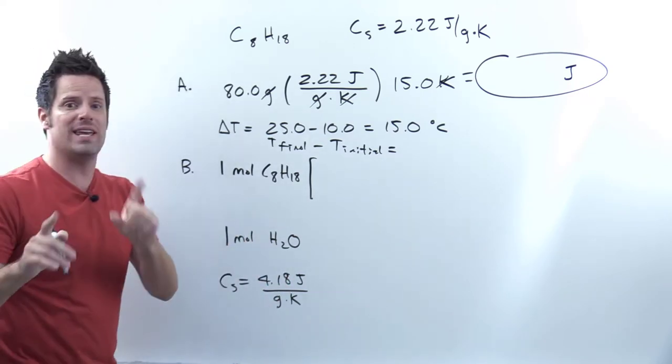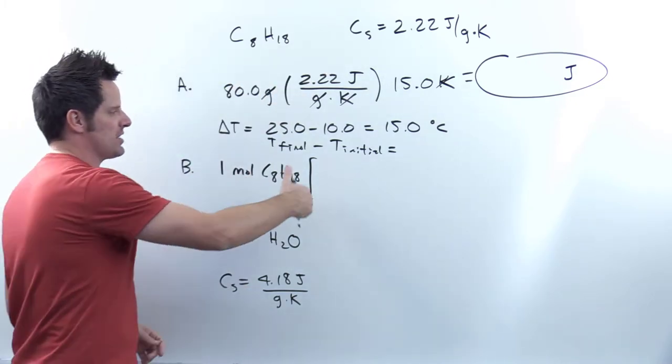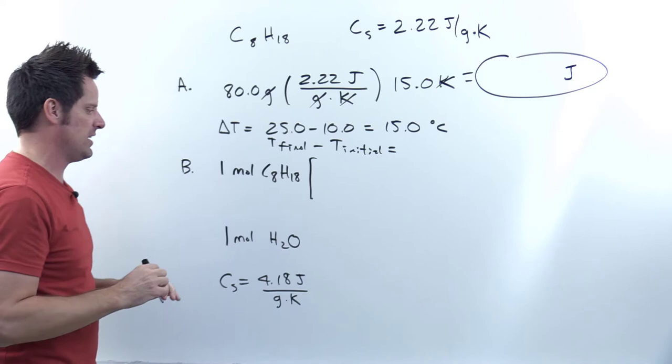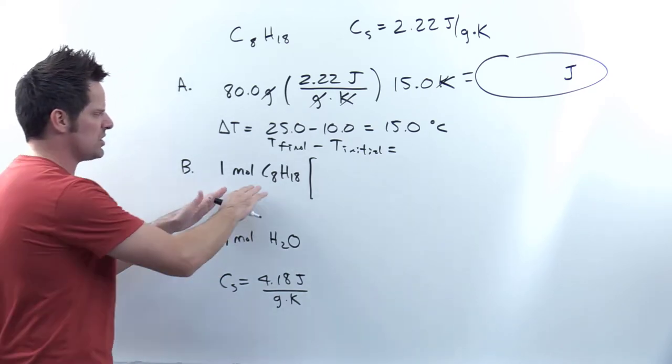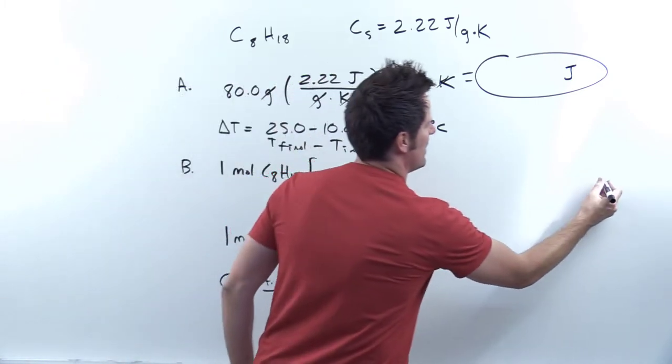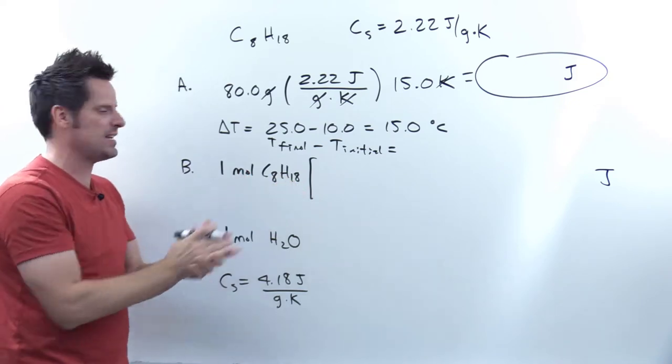So how do we do that? Well, again, we're going to use this specific heat value right here and do dimensional analysis to eventually arrive at what we're trying to figure out, which is units of energy. Units of energy, SI units are joules. So I'm going to do some dimensional analysis here and eventually arrive at some answer that has units of joules. That's my target destination unit.